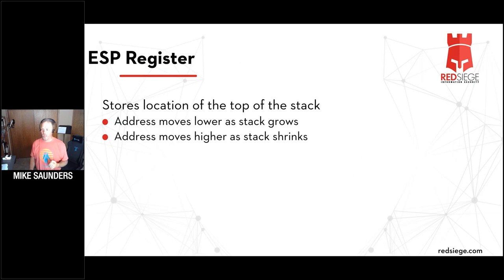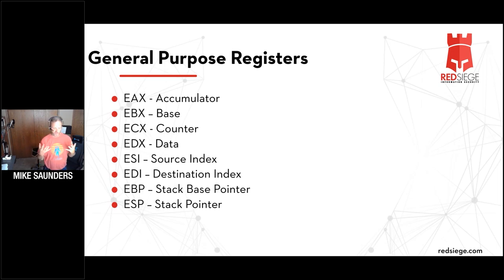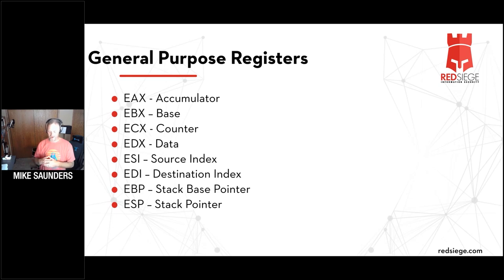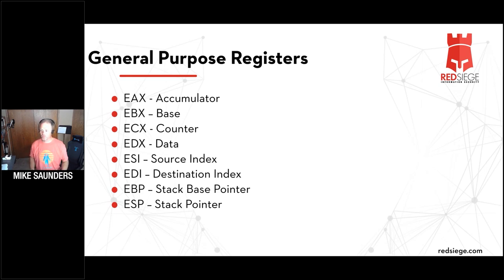Key things to remember: the address moves lower and the ESP register moves lower as we push data onto the stack. As we pop data off the stack, the address moves higher. There are other registers that are part of the general purpose register set — the accumulator, stack pointer, base pointer — all important, but we're not going to talk about all of them. They historically had more defined uses; compilers can now use them more flexibly. The only one we're focusing on here is the stack pointer.